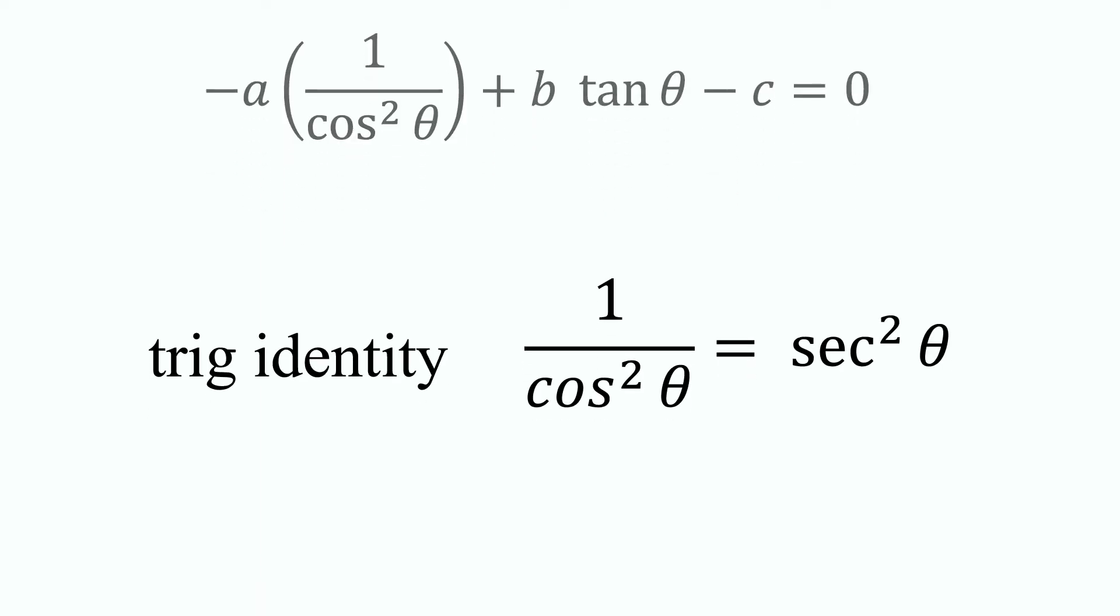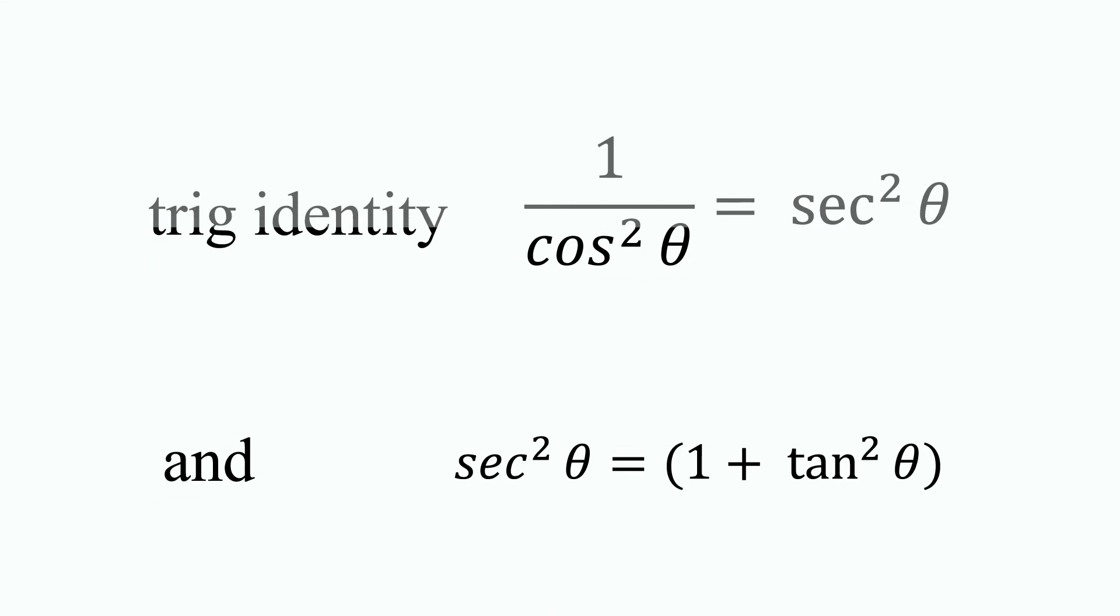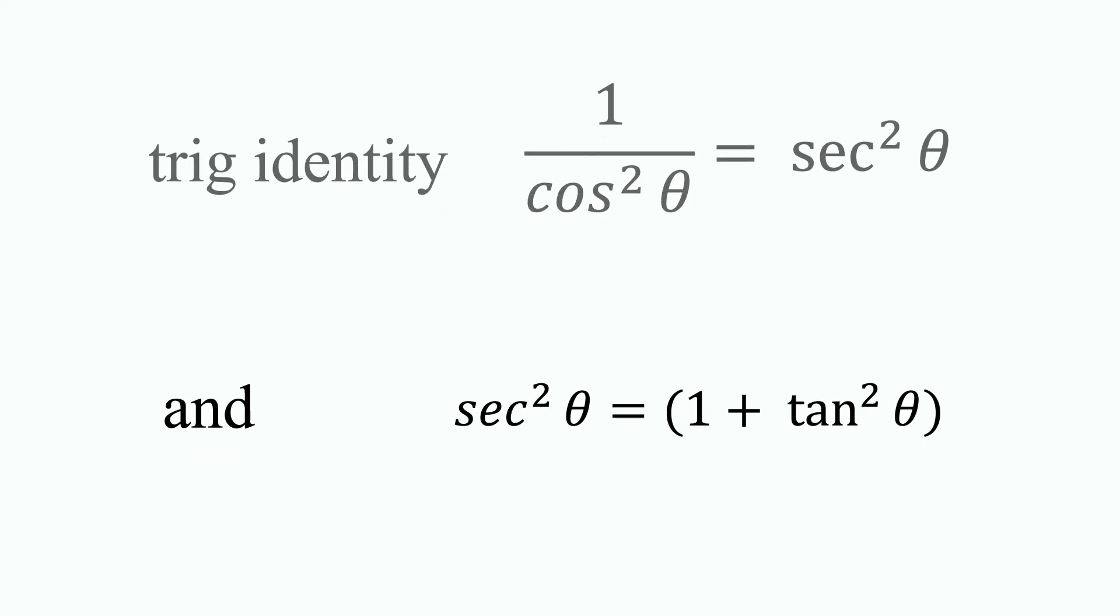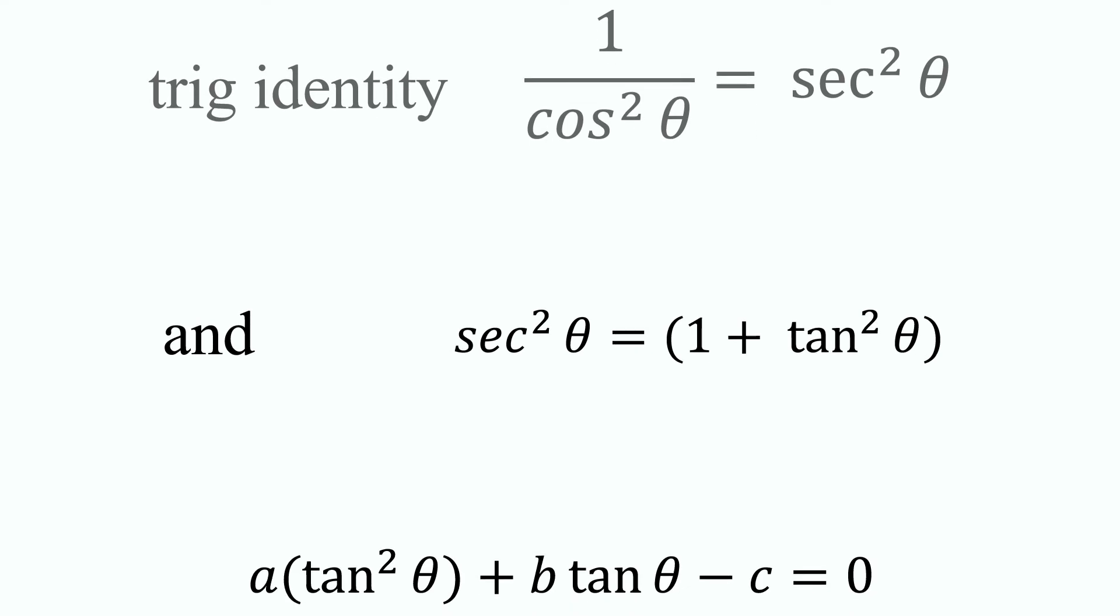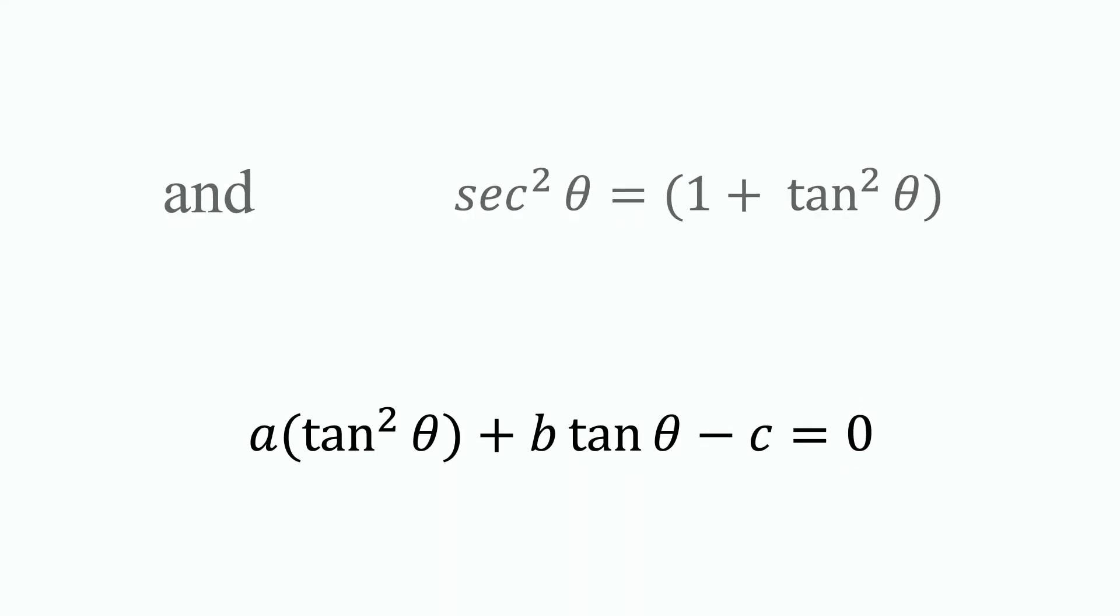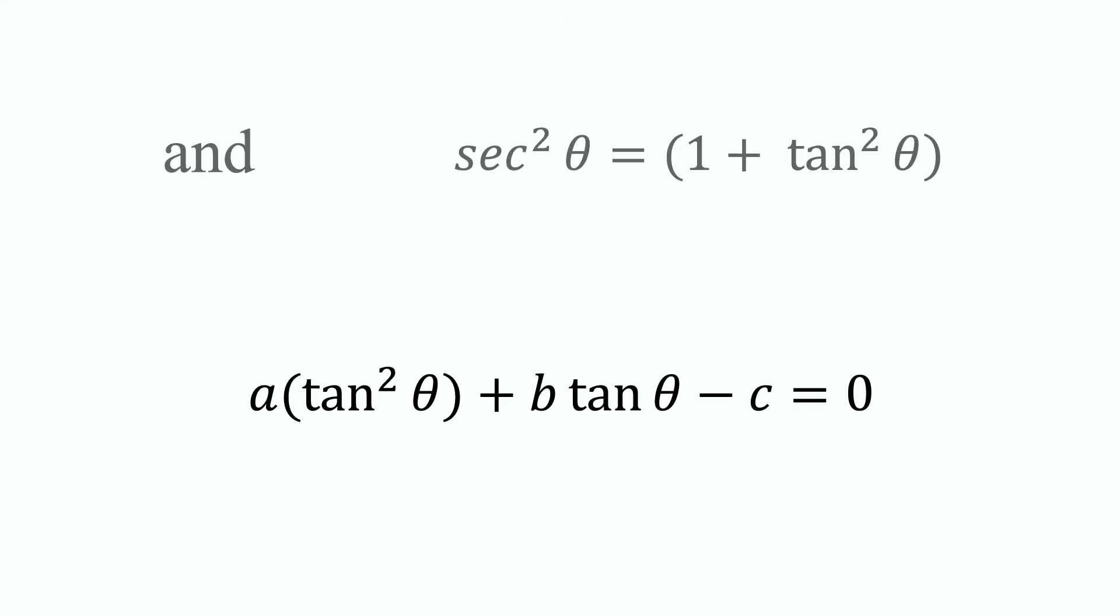Now we'll use the trigonometric identity one over cosine squared theta equals secant squared theta, and the other trigonometric identity secant squared theta equals one plus tangent squared theta. Take that value and substitute it back in for one over cosine squared theta.